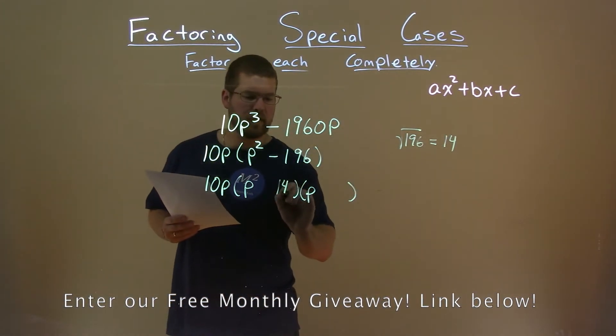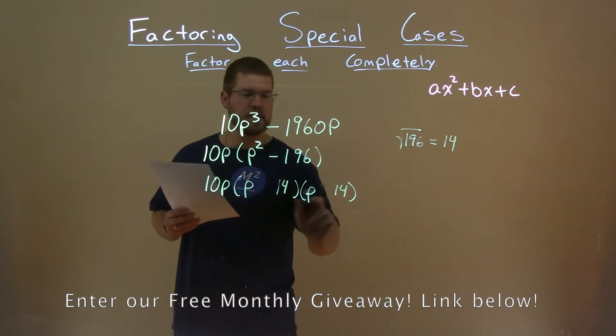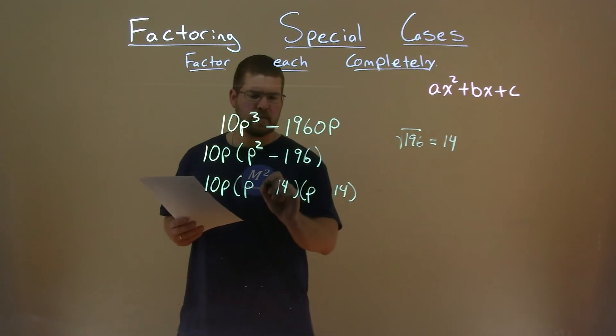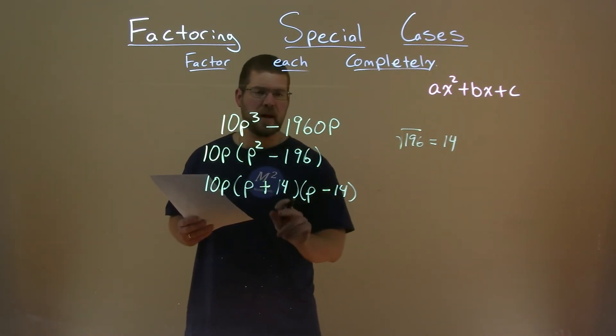So if I put a 14 here and a 14 here, 14 times 14 gets me that 196, and it's a negative 196. So one's positive, one's negative, and that gets us here a negative 196.